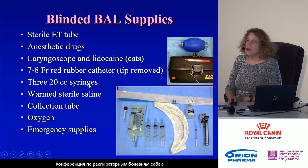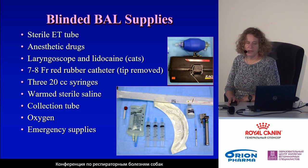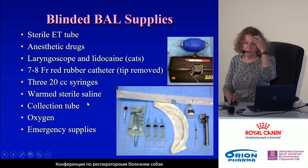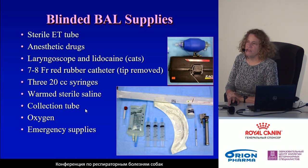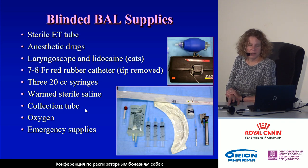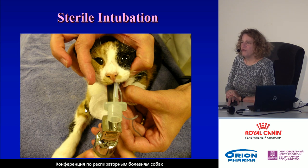I usually prepare three 20 cc syringes. Depending on the size of the animal, for a cat I may start with one or two syringes with 15 to 20 milliliters of saline drawn up and ready to go. Ideally the saline should be warm, to body temperature. I also need collection tubes for the sample, oxygen to deliver before and after the procedure, and emergency supplies just in case.